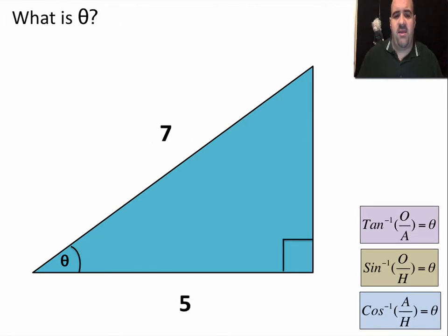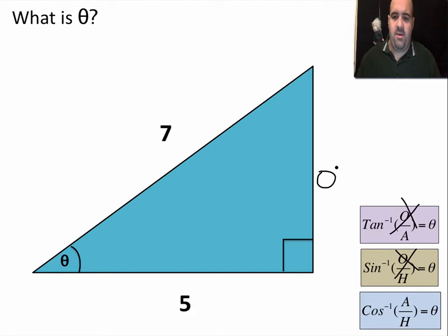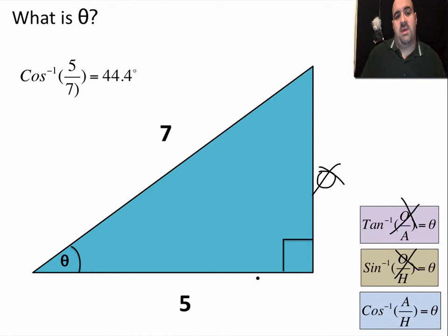Another theta problem: this time we don't know the opposite side, but we know the adjacent side and the hypotenuse. Anything with the opposite side is eliminated. We use inverse cosine: cos⁻¹(5/7) = 44.4 degrees.